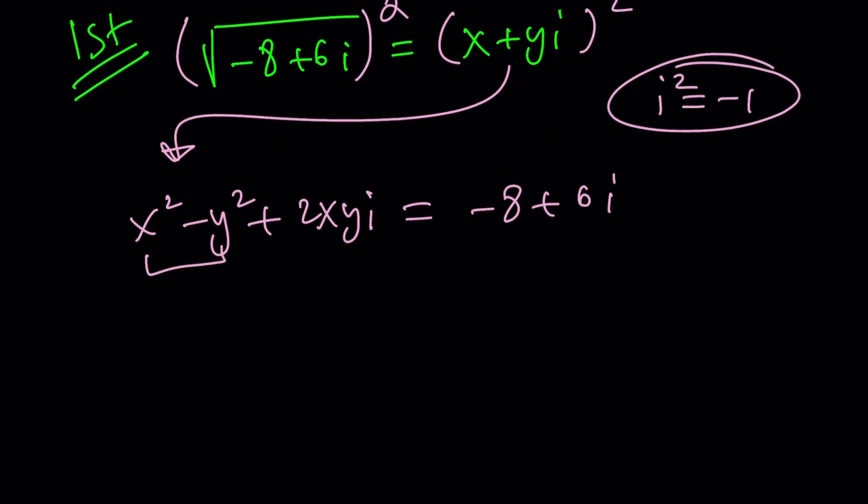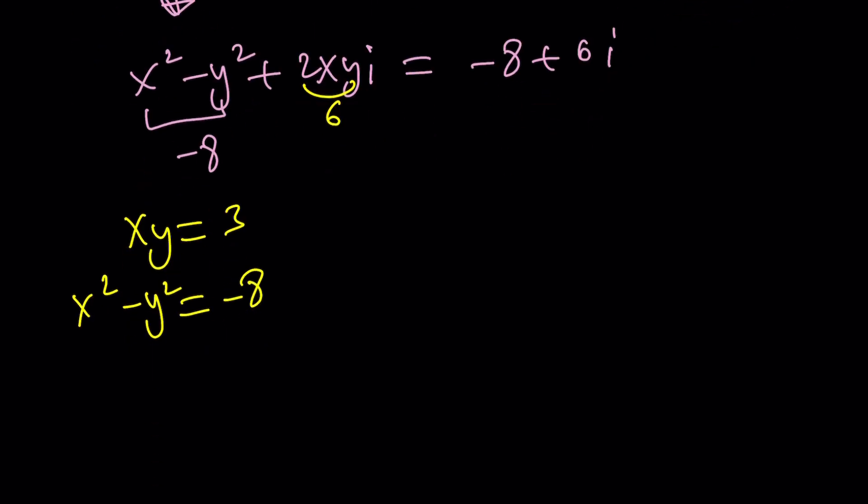Here, the real part is the real part. So it's negative eight. And this is supposed to equal six. So xy is equal to three. x squared minus y squared is equal to negative eight.